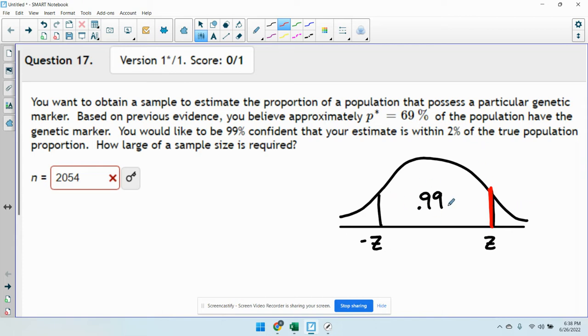So if it's 99% in the middle, that means there's going to be 0.005 outside of either side. So when I do that, if I'm putting in the area to the left of this Z value, I should be putting in 0.995.